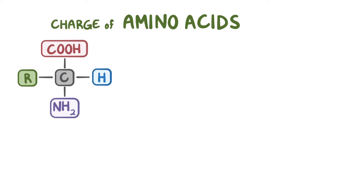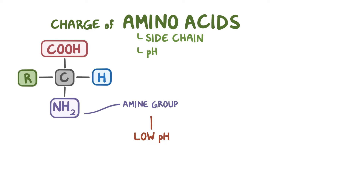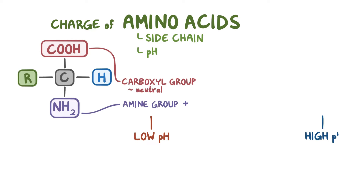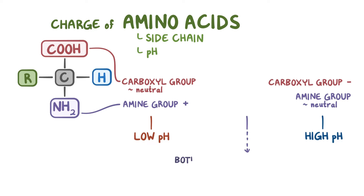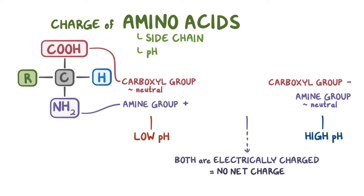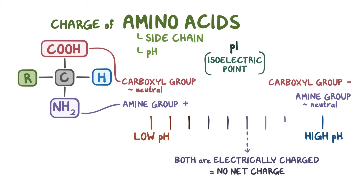Keep in mind that the charge on an amino acid really depends on its side chain as well as the pH. At a very low pH, the amine group is positive while the carboxyl group is neutral. At a very high pH, the amine group is neutral and the carboxyl group has a negative charge. At a pH somewhere in between, both groups are electrically charged and they cancel each other out, resulting in no net charge. This just-right pH, also known as the pI, or isoelectric point, is different for every amino acid and depends on the specific side chains.